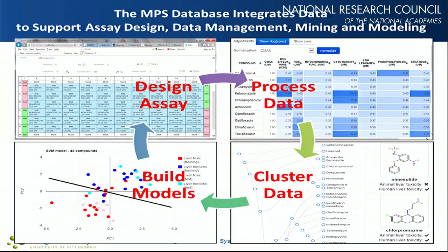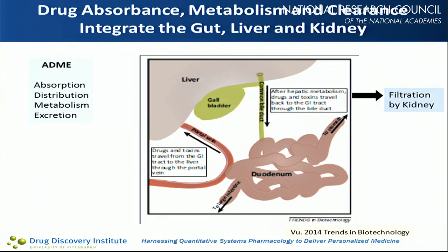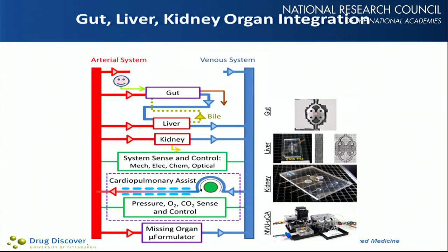We've implemented this database for the liver, and in the next phase we're putting together the liver, kidney, and gut, as Jonathan indicated. When combining these organs, we'll be missing inputs like hormones from other organs, so we've designed missing organ micro-formulators at the bottom of the system to send in doses of hormones to partially compensate for the absence of other organs. We're also including a cardiopulmonary assist system because pumping through three different organ systems is a significant challenge.